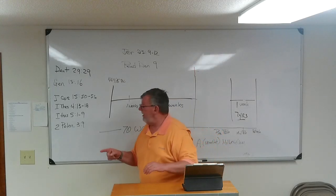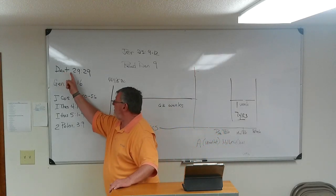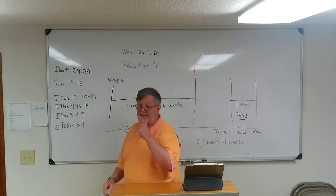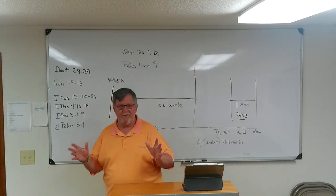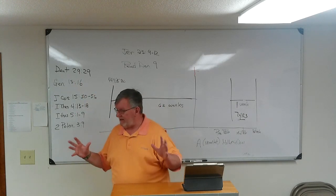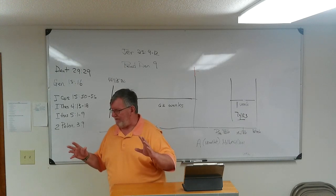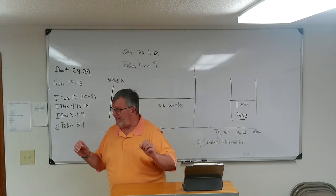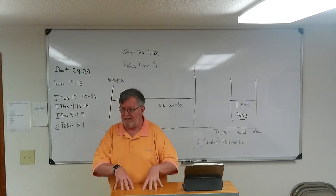In Deuteronomy chapter 29:29 it says there are secret things of God that are just secret to God. There's things that God lets be known and those are the things that we need to live upon.